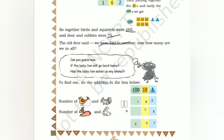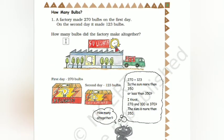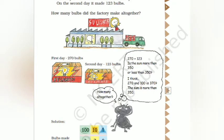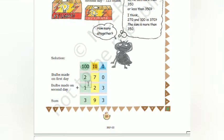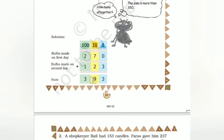How many bulbs did a factory make? On the first day it made 270 bulbs; on the second day it made 123 bulbs. How many bulbs did the factory make altogether? Is the sum more or less than 350? First day 270, plus 100 gives 370 - already more than 350. So 270 plus 123: 0 plus 3 is 3, 7 plus 2 is 9, 2 plus 1 is 3. Total is 393.